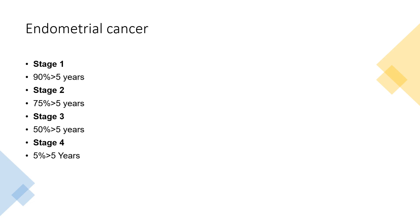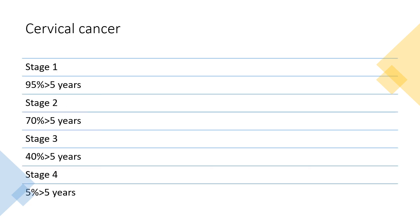For endometrial cancer survival: stage 1 is 90% over 5 years or more, stage 2 is 75%, stage 3 is 50%, and stage 4 is 5% — so 90, 75, 50, and 5. For cervical cancer: stage 1 is 95% over 5 years or more, stage 2 is 70%, stage 3 is 40%, and stage 4 is 5% over 5 years.